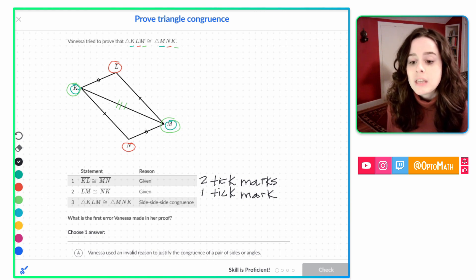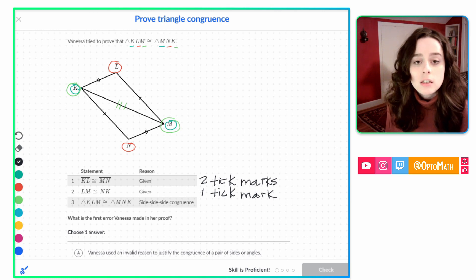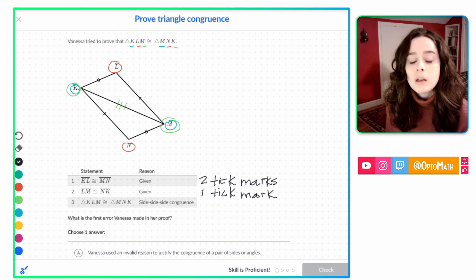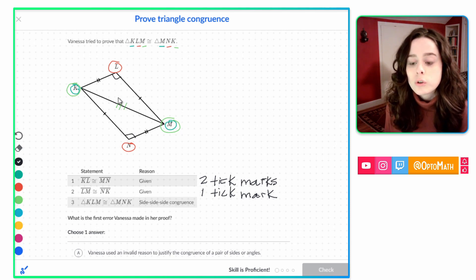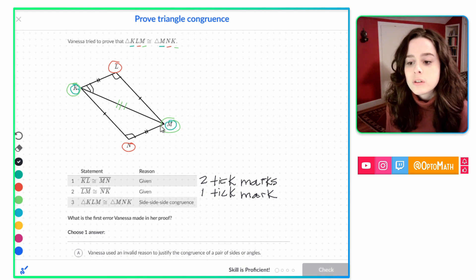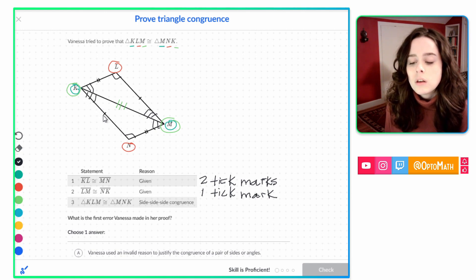I do want to take a moment and make sure we understand that, again, these letters match up. And that's how we can tell what pieces are congruent to what pieces. So we could say that this angle is congruent to this one. This angle is congruent to this one. And this one is congruent to this one.